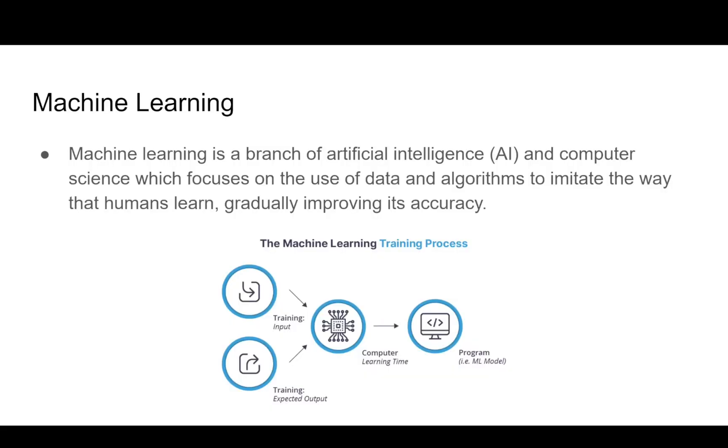Machine learning is a branch of artificial intelligence, also known as AI, and computer science which focuses on the use of data and algorithms to imitate the way that humans learn, gradually improving its accuracy. You can see the diagram below. I have the input training dataset and the input expected outputs as well. We feed these things into the computer, also known as the machine learning model.